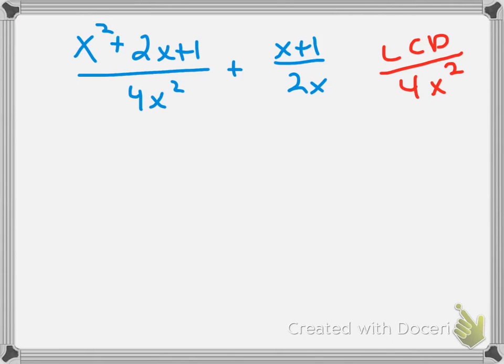Now, to get the common denominator, I don't need to do anything to my first denominator. My second denominator, I need to think, what can I multiply that by to get the 4x squared? And that's going to be a 2x. So, I multiply both numerator and denominator by 2x.